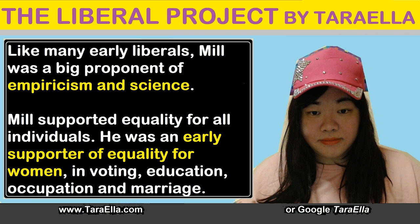Finally, Mill strongly supported the trend towards increasing equality for all individuals in Western societies during his time. He was an early supporter of equality for women in voting, education, occupation, and marriage. Consistent with his overall beliefs, he justified his views on the argument that the changes would lead to the improvement of society and the increased happiness of oppressed groups.